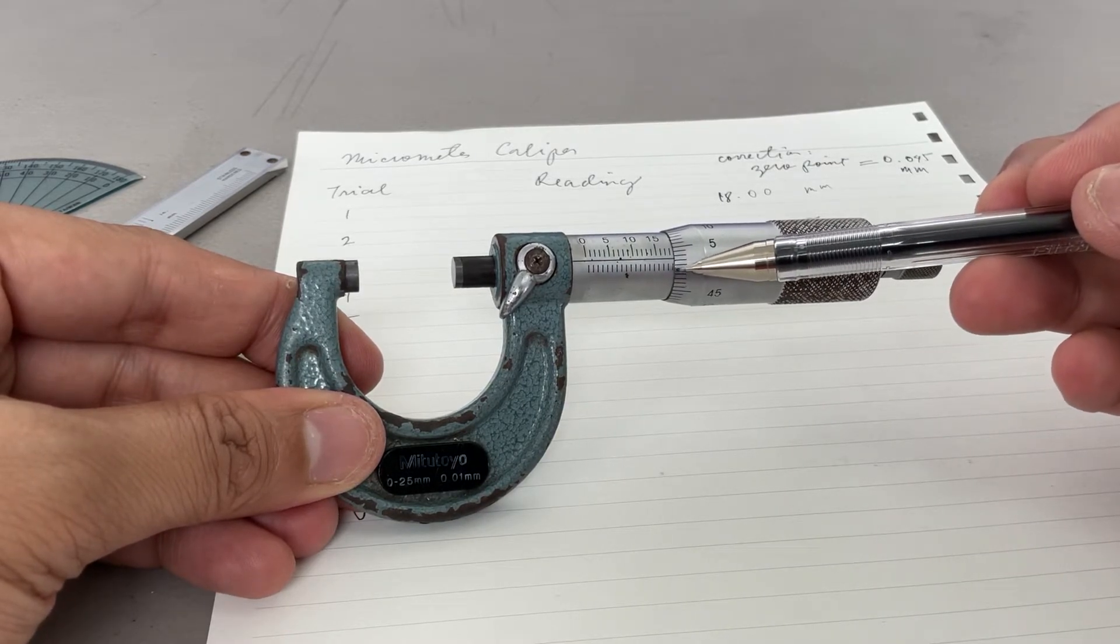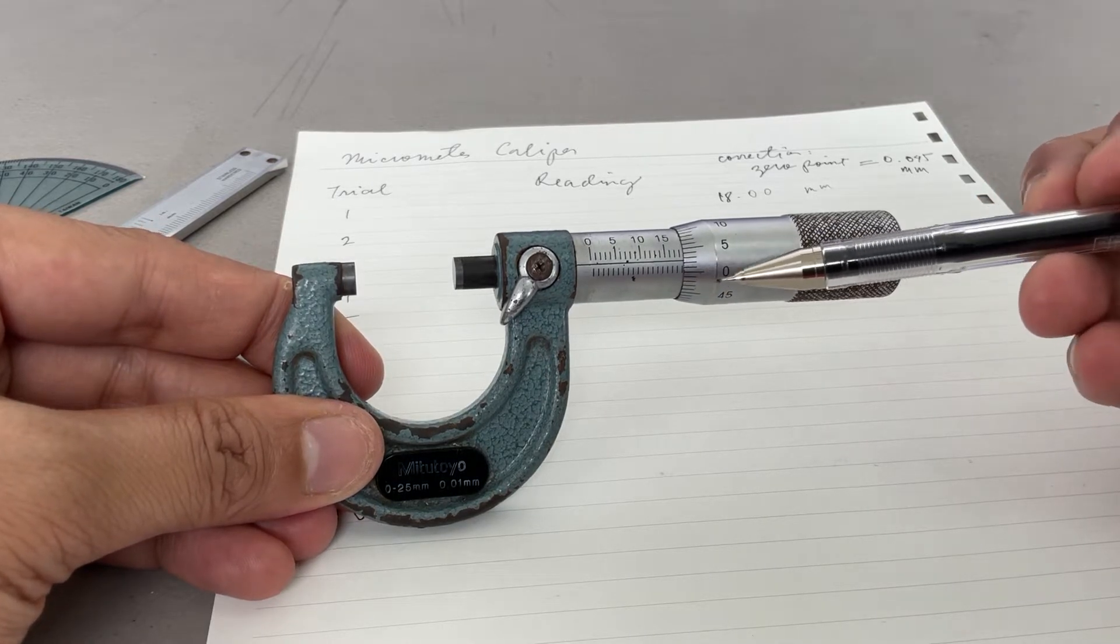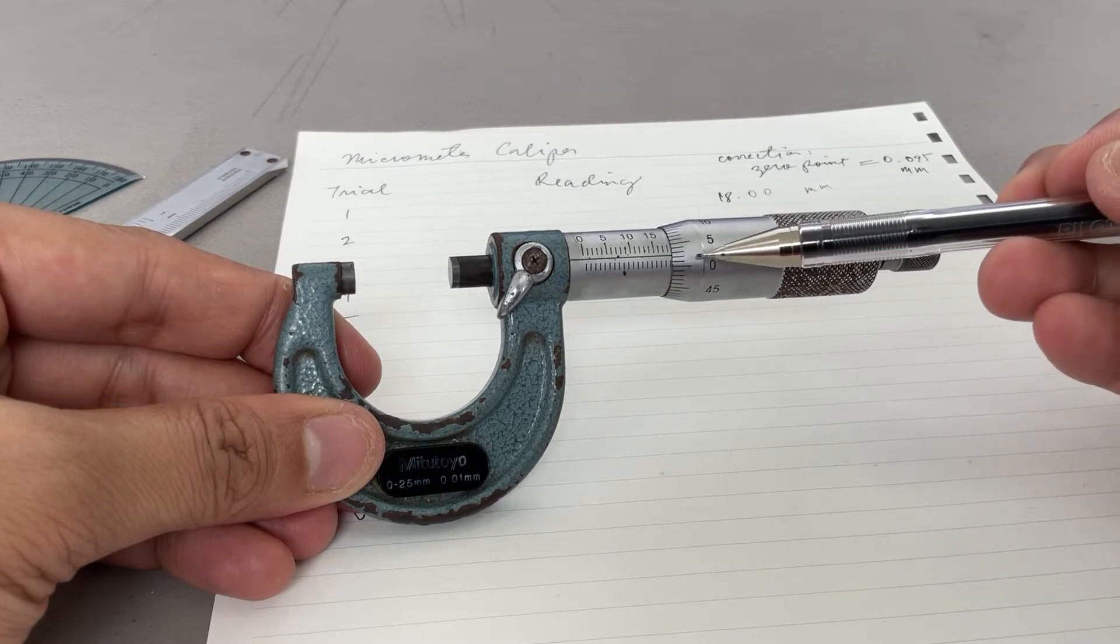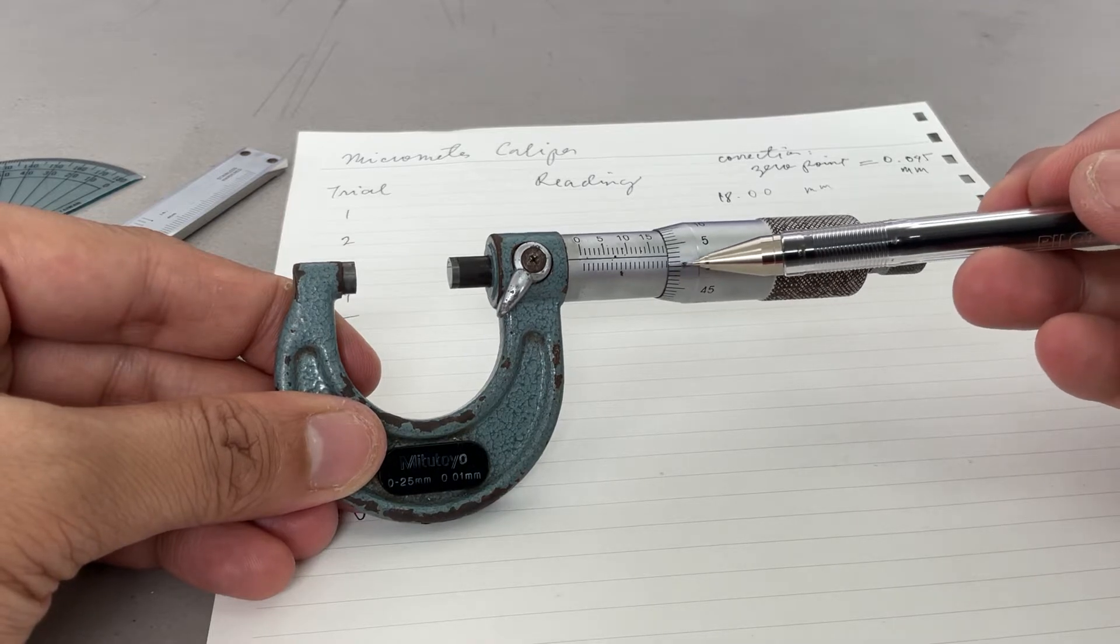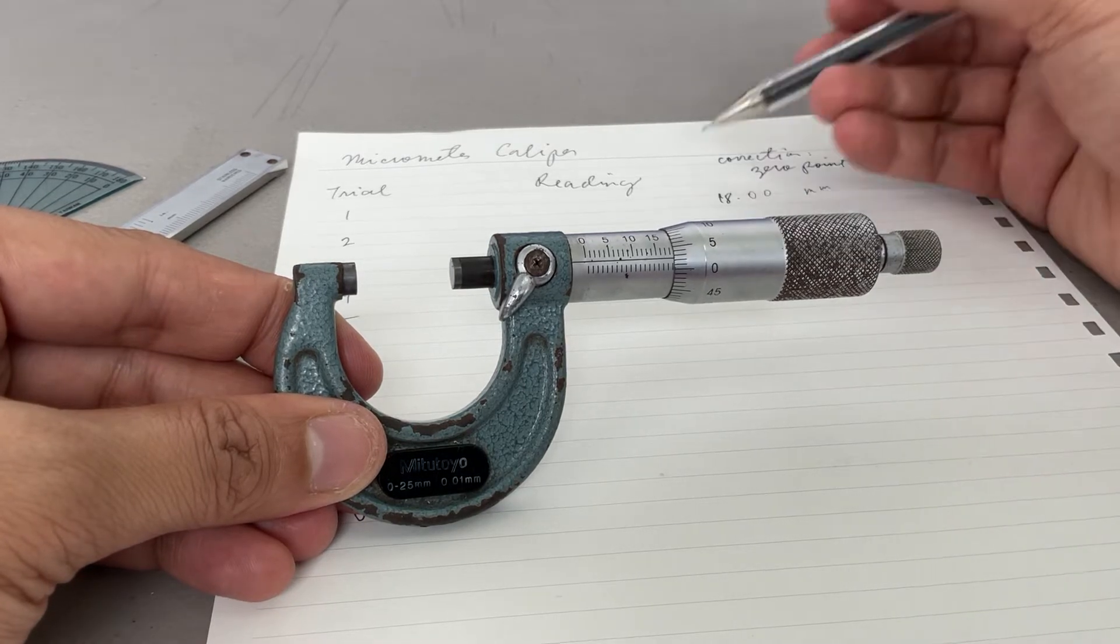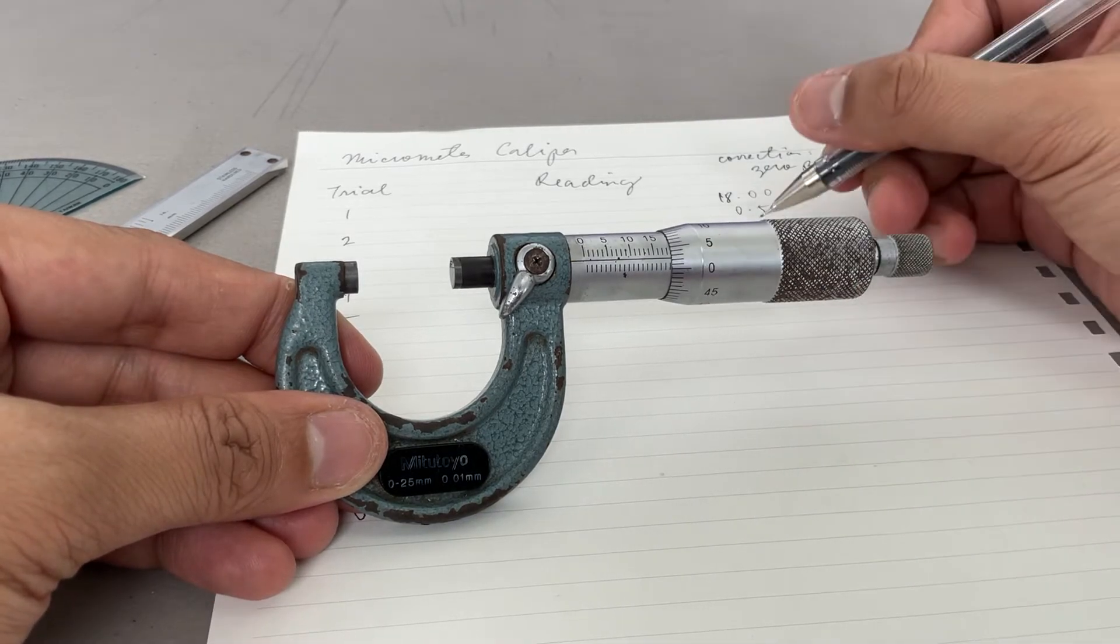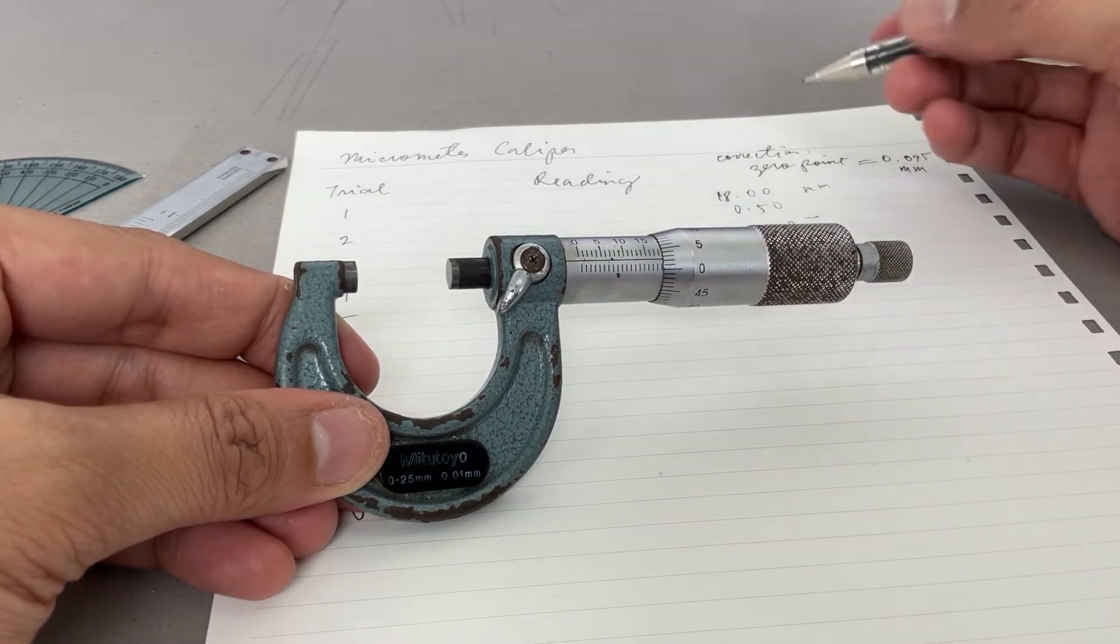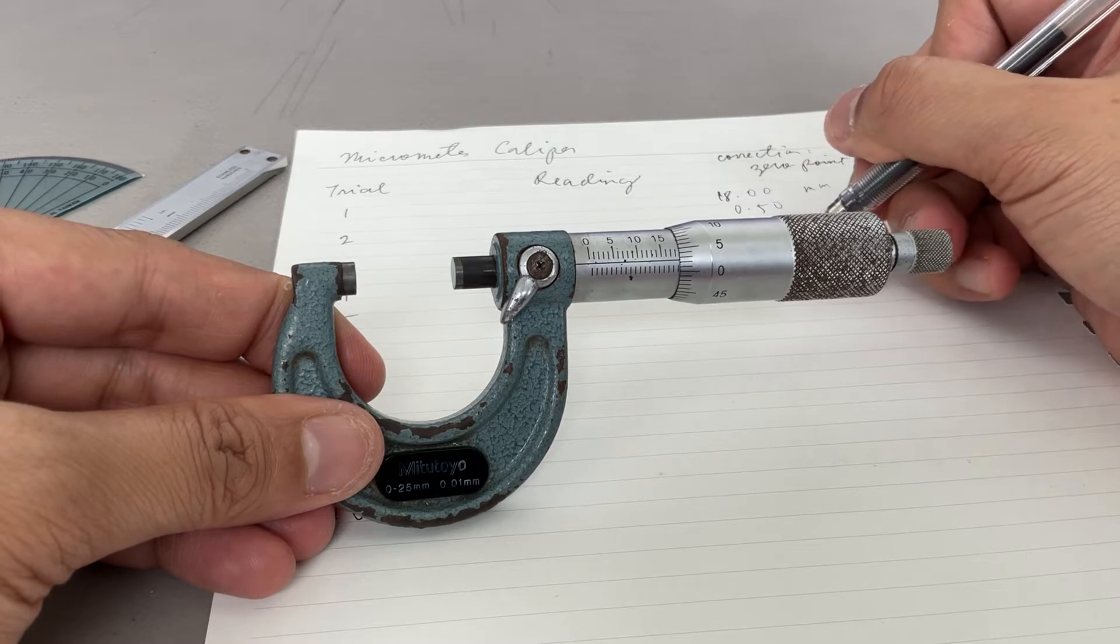On the micrometer scale, look for the line that perfectly coincides with the horizontal line. You already have 0.5 plus one, two. It's not exactly two but not three either, so it's in between. 0.025. You can approximate. The total reading now is 18.525 millimeter.